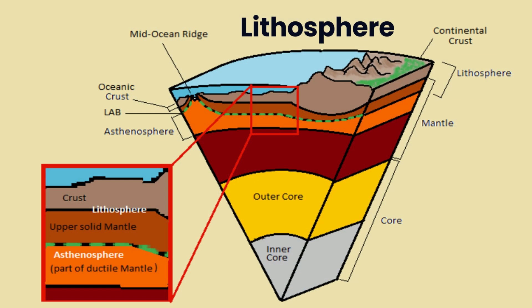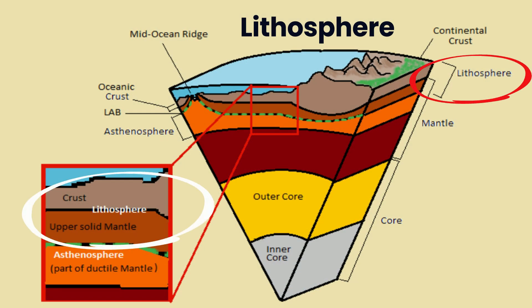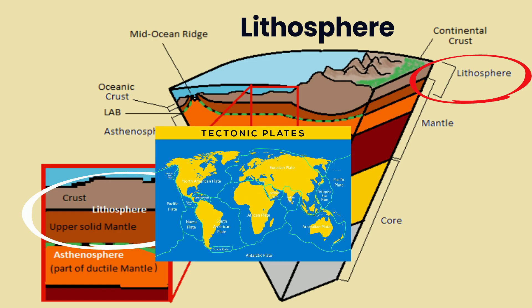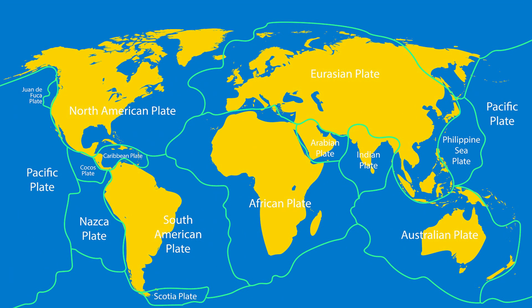The lithosphere is made up of the crust and the top, very rigid part of the mantle. It's solid, strong, and broken into pieces. These pieces are important because they're called tectonic plates.